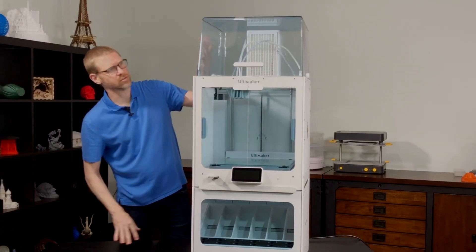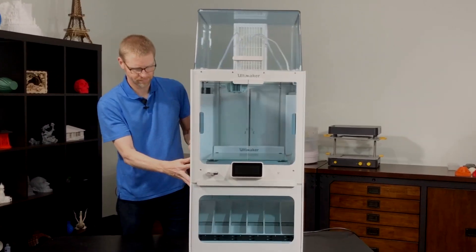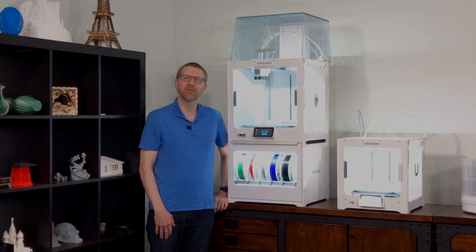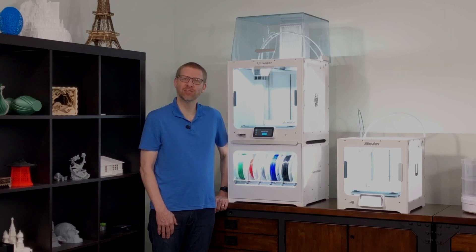That's the fully assembled Ultimaker S5 Pro Bundle. Well, and there you have it. As you can see, it's really easy to unbox and set up the new Ultimaker S5 Pro Bundle. I hope you'll check out our website to learn more. Thanks for watching. Be sure to subscribe to our channel to see future videos. See you next time.